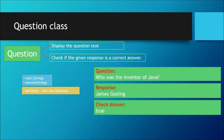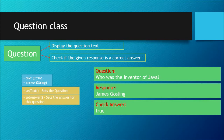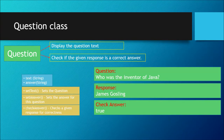Now let's take a look at the methods. The first method you need is to set the question, so we're going to create a method called setText that will set the question. This method does not return anything — it just sets the question. Next is setAnswer, which sets the answer for this question and also does not return anything. Then there is checkAnswer, which checks a given response for correctness and returns true if the answer is correct, or false otherwise.